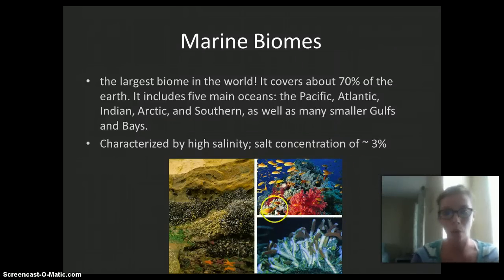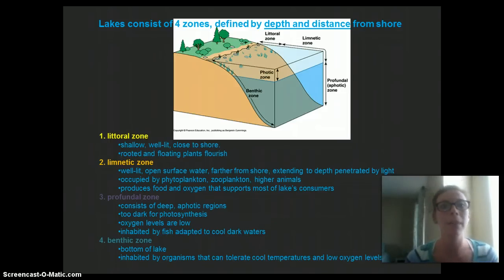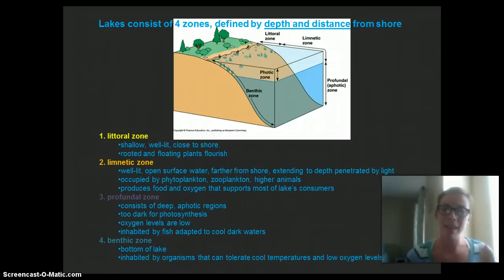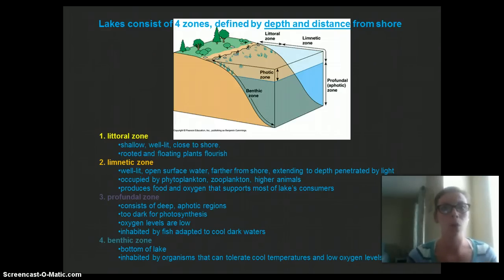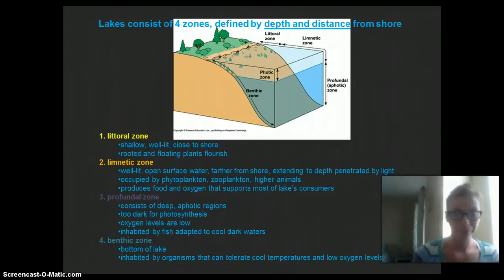Our coral reefs are highly productive ecosystems. Now let's talk about lakes first. Lakes are defined by four different zones that are defined by depth and distance from shore. All aquatic biomes are going to be categorized into different zones, and we are going to talk about the lake zones first.